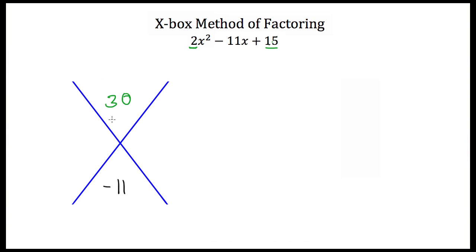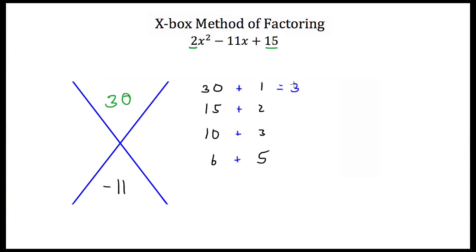Now we need all the factors of 30: those are 30 and 1, 15 and 2, 10 and 3, and 6 and 5. Because this 30 is positive, we're going to add our factors. 30 and 1 is 31, 15 and 2 is 17, 10 and 3 is 13, and 6 and 5 is 11. Hopefully some of these added factors will equal this negative 11. We have 11 here and we have a negative 11, which means our factors are 6 and 5.